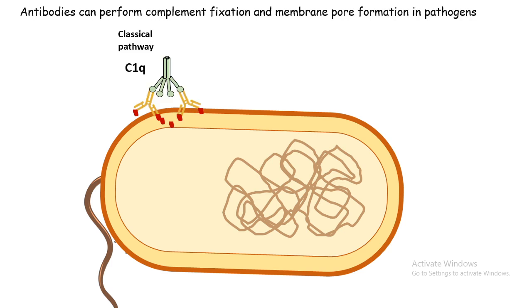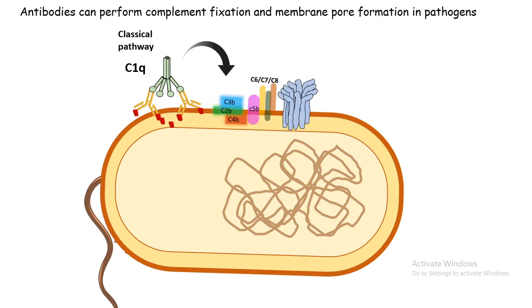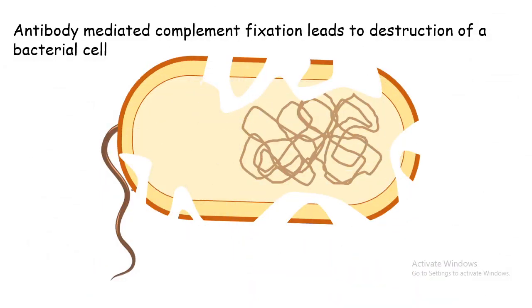The next method is antibody-mediated complement fixation. Antibodies bind to surface proteins of a bacterium and serve as a platform for binding classical complement components. Complement protein C1q can bind to the end of the antibody, and through a complicated cascade of events, membrane pores are created in the bacterium. This causes a pressure imbalance, ultimately lysing and killing the bacterium.